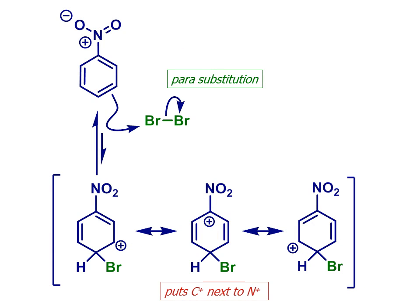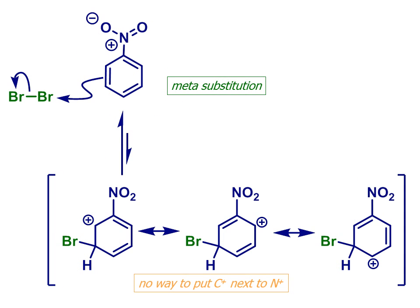The same adverse circumstance will also arise if we substitute at the para position. But if the incoming electrophile attaches to C3, the meta position, then that positive charge stays away from the electron withdrawing group, which is preferred and thereby a lower energy pathway.